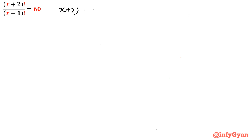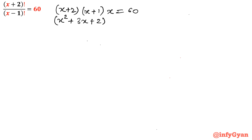Before solving, if you have not subscribed to my channel yet, please do subscribe. Thank you. Now solving: (x+2)(x+1)(x) = 60. Opening the bracket: (x²+3x+2)(x) = 60.